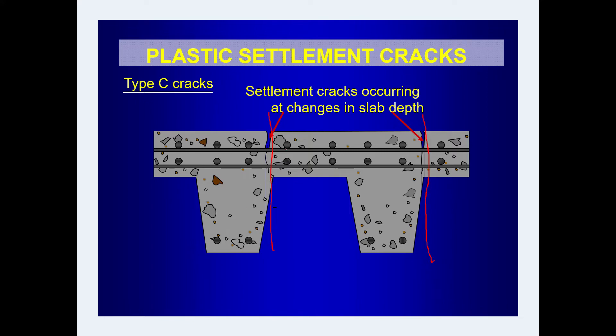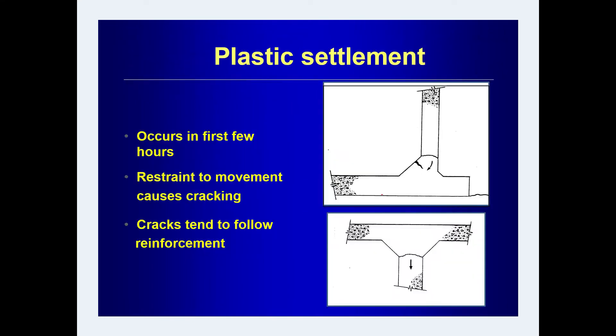Another arch type of crack is seen in columns and shear walls. This occurs in the first few hours, mainly because of restraint to movement. In these deep sections, restraint causes cracks that tend to follow the reinforcement pattern. The main reasons are thin and deep sections, reinforcement congestion, and deficient amount of compaction.